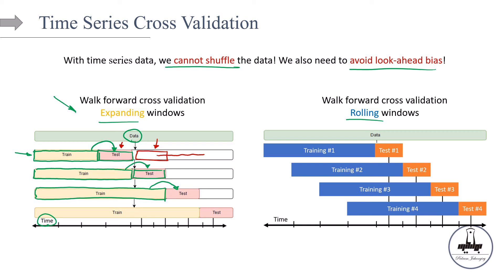On the other hand, we have the idea of rolling windows. We take a portion of the data, train the model there, test it on the next segment. Then we shift this window to the right — that's our rolling window. Instead of always starting from the beginning of the time series, we keep the window at a fixed size, say 60 days, and roll it forward: 60 days, 60 days, 60 days, and so on.